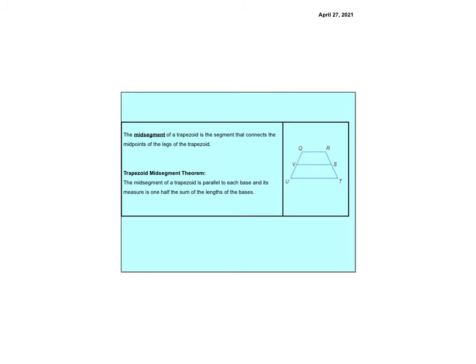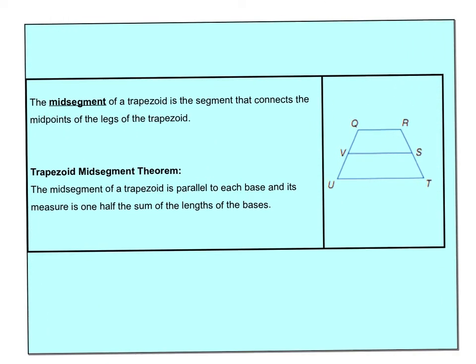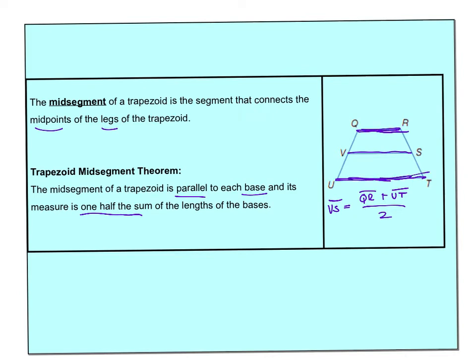One of the things we talk about with the trapezoid is the mid-segment. The mid-segment connects the legs of the trapezoid, is parallel to the bases, and equals one half the sum of the lengths of the bases. So the mid-segment VS equals the two bases divided by 2 — you're basically averaging them. QR is the top base, UT is the bottom base, and VS is the mid-segment, exactly halfway in between.